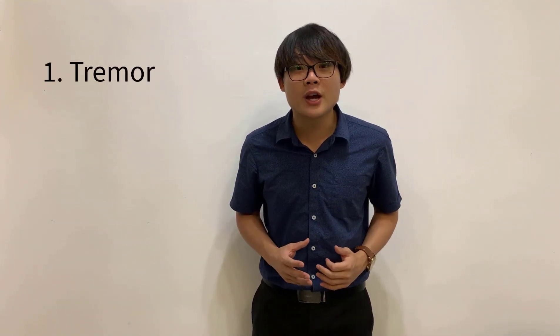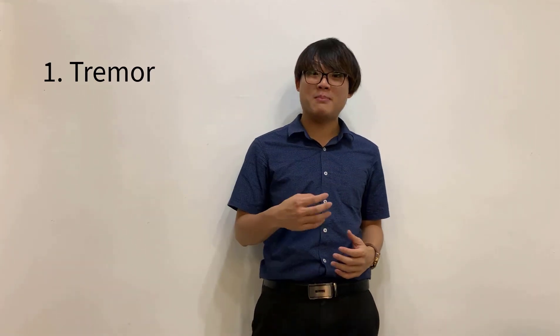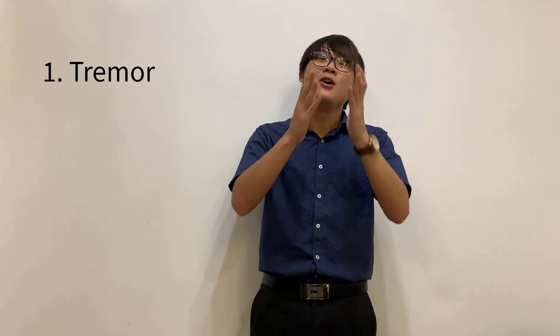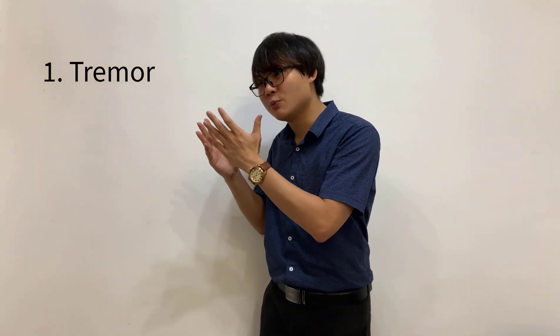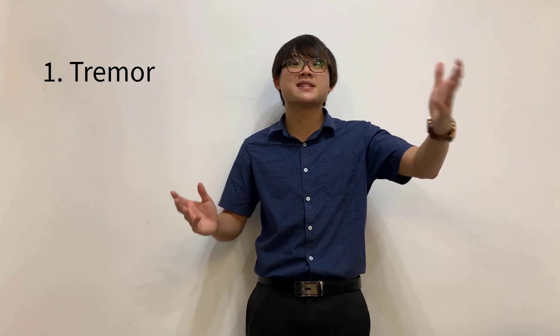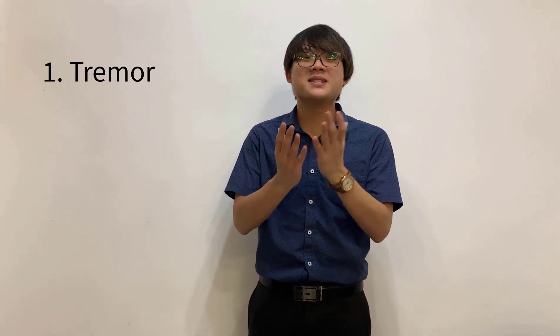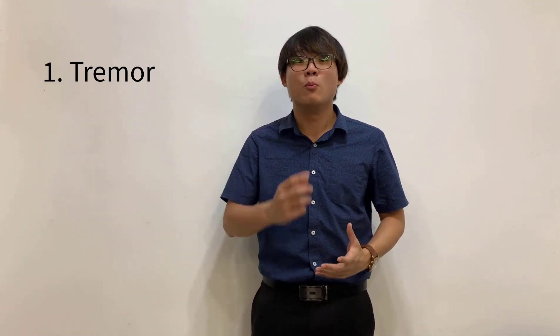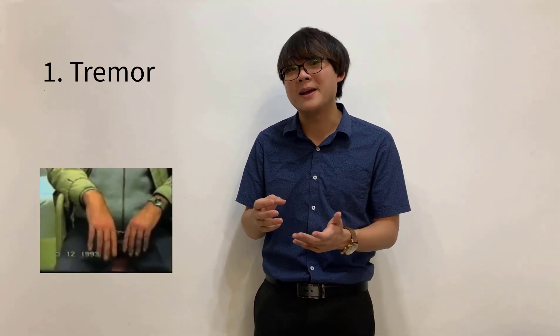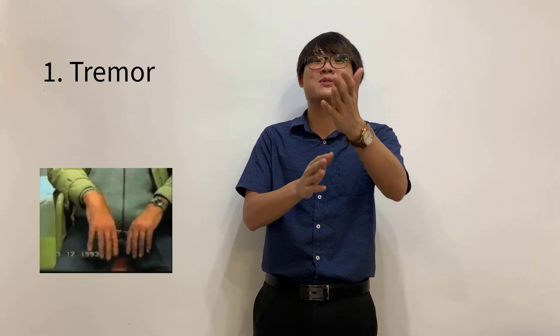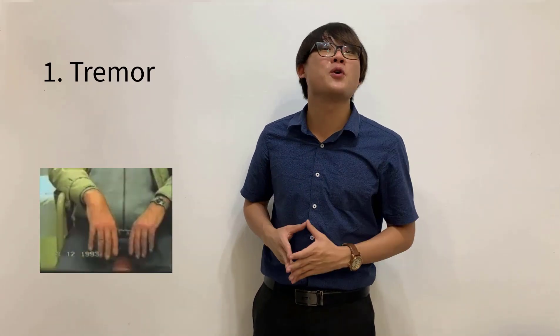The first thing you must understand is tremor — tremor simply means trembling of the hands. But not all tremors equal Parkinson's disease. I have students coming to me asking if their tremor means they have Parkinson's. The Parkinson's disease tremor typically starts from one side and has a specific pattern we call pill rolling. This is something you'll want to write in your exam.